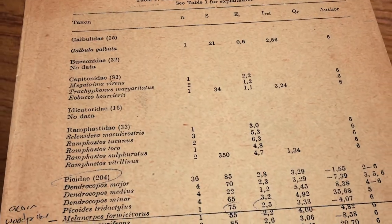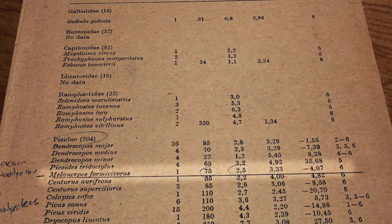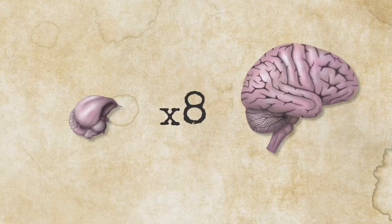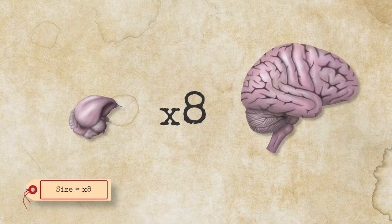And from the mass, you can estimate the size. The human brain is about eight times the size of the woodpecker brain. The woodpecker brain was about 2.5 grams, and the human brain is about 1,400 grams.